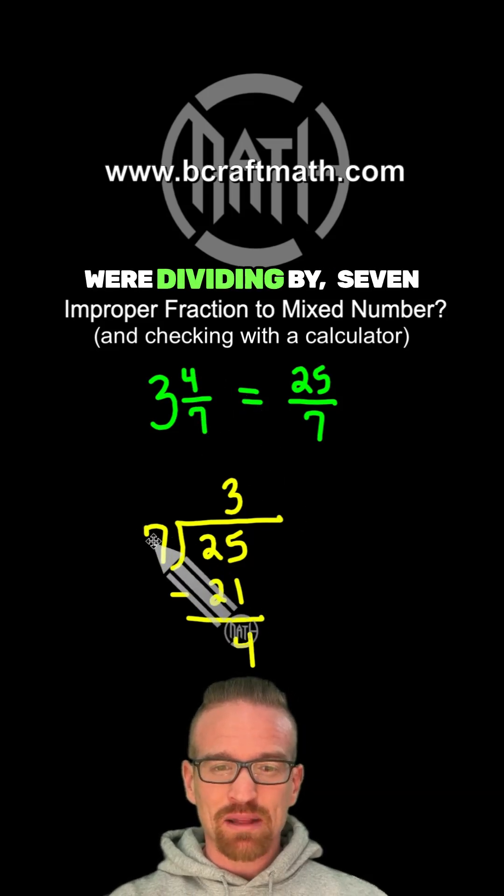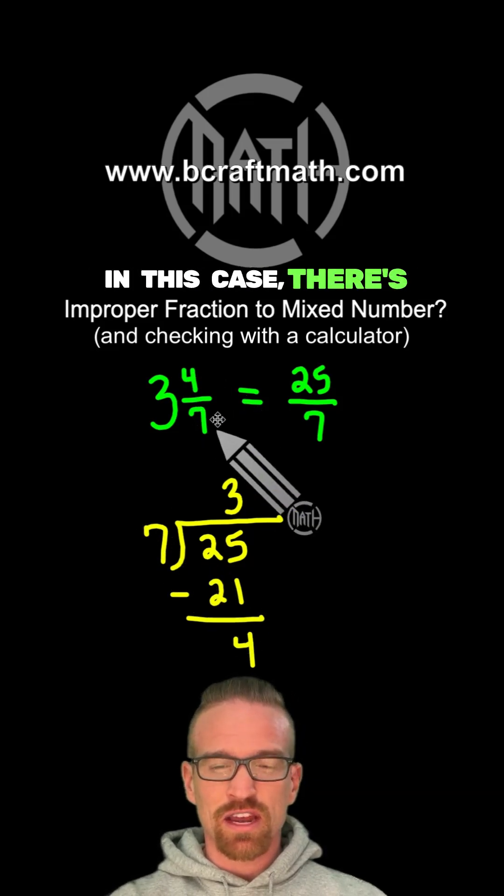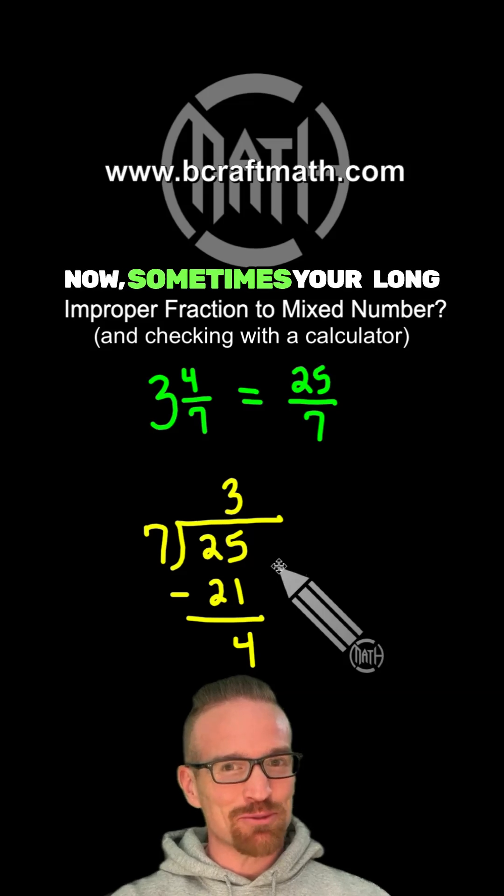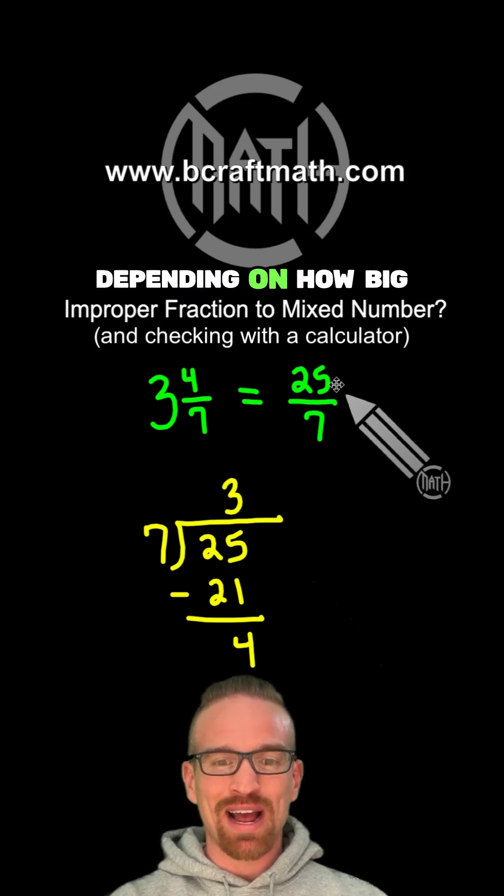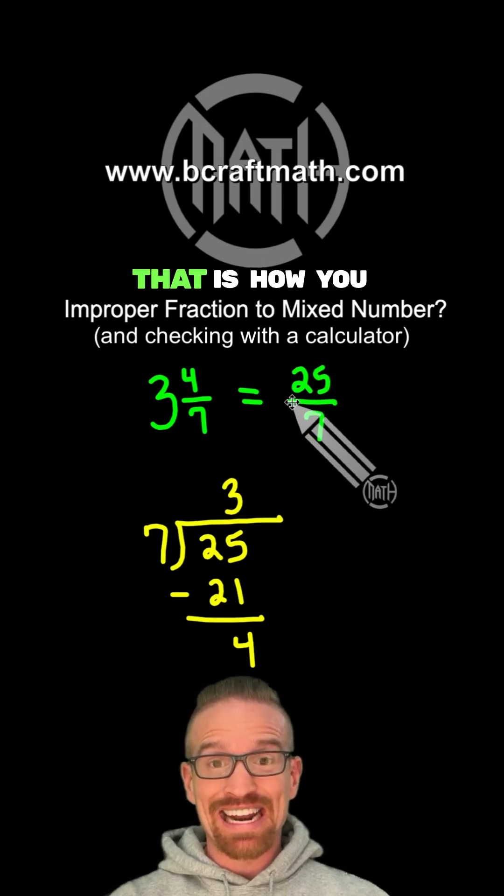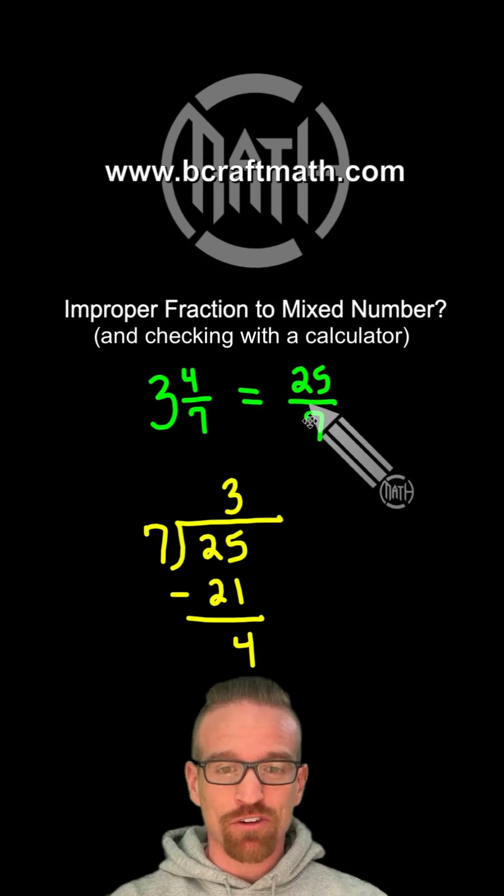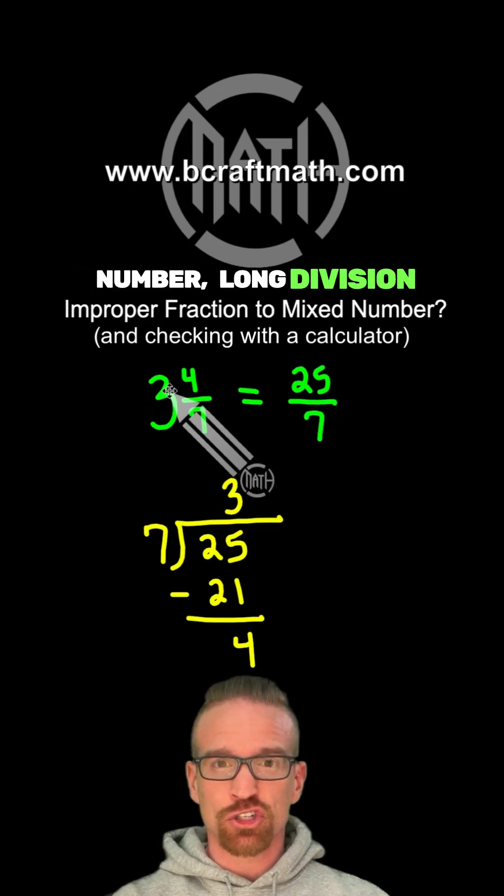And then whatever we were dividing by, 7 in this case, there's our denominator. Now sometimes your long division can get longer depending on how big these numbers are. But that is how you can take an improper fraction and convert it back to a mixed number. Long division.